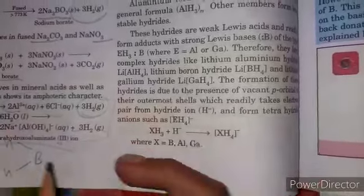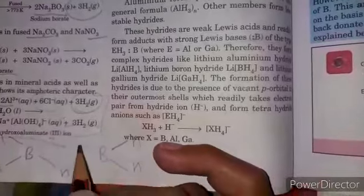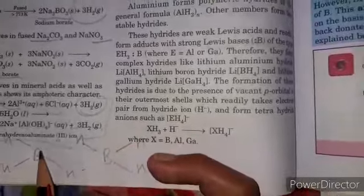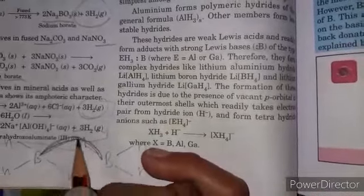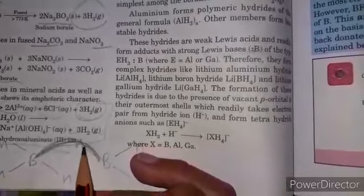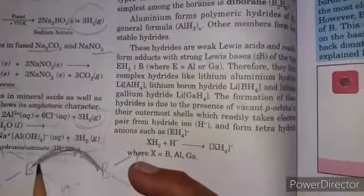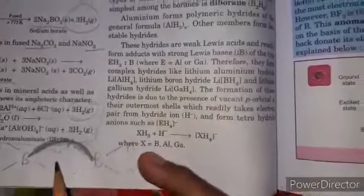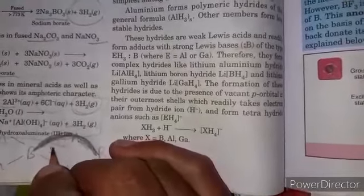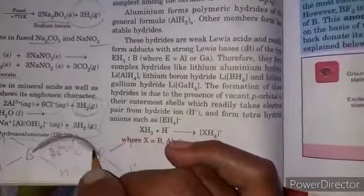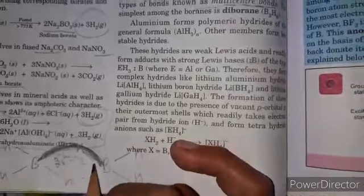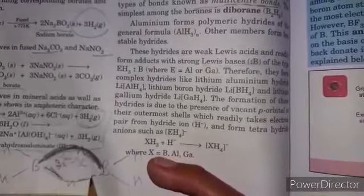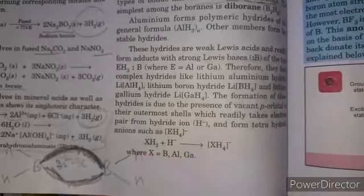B2H6 exists as a dimer. The shape has two hydrogen atoms bonded terminally to each boron, and two hydrogen atoms bridge between the borons. These bridging bonds form three-center two-electron bonds - there are three atoms but only two electrons forming the bond. This type of banana bond creates a bridge with only one electron pair. It's called a bridging bond or banana bond, a two-electron three-center bond.